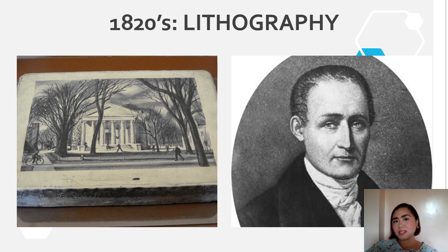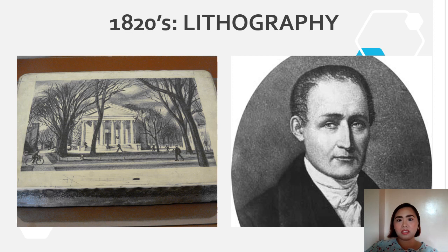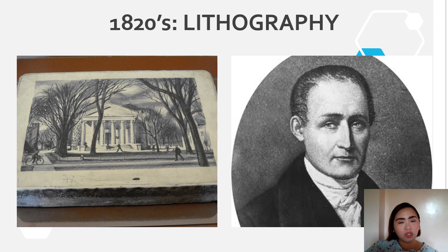Fast forward to the 1820s and we have lithography. Joseph Nipsey, a French scientist, improved the art of lithography — a method of printing based on the immiscibility of oil and water. He discovered a way to copy engravings onto a lithographic limestone using materials mainly including bitumen, a light-reacting asphalt. When light shined through the paper, it would burn an image into the dark bitumen, creating an almost identical reproduction of the original.